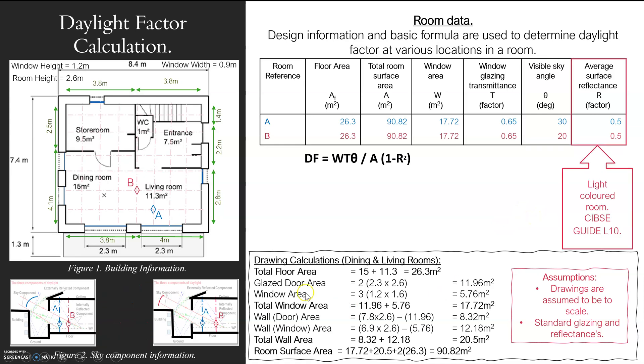Then your average surface reflectance internally - what we're looking at is going to bounce off all these surfaces. I've used CIBSE Guide L10 - the Chartered Institution of Building Services Engineers. They have hundreds of guidance documents for things like lighting.